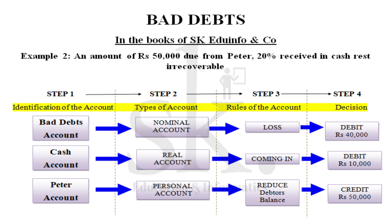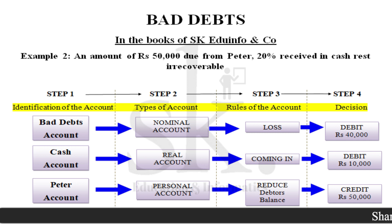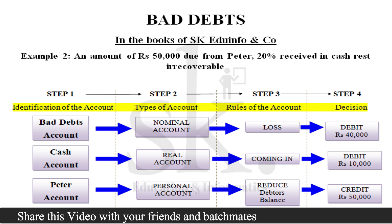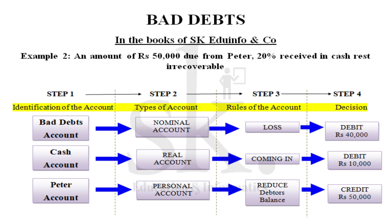Cash account will be debited because you are receiving cash — 10,000 coming in. Peter, who was a debtor, was supposed to pay you 50,000 but has only paid 10,000, and the rest is bad debt. You require to reduce the debtor's balance — any reduction in the value of an asset is credited. So bad debt account is debited with 40,000, cash account is debited with 10,000, and Peter's personal account is credited with rupees 50,000.